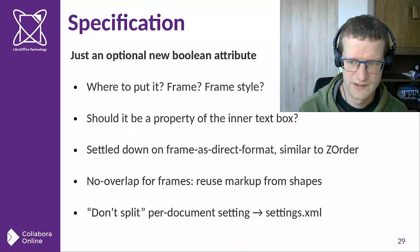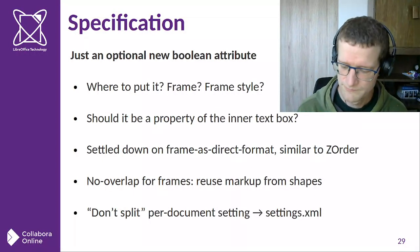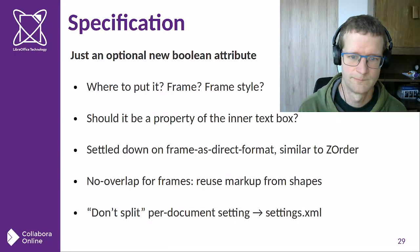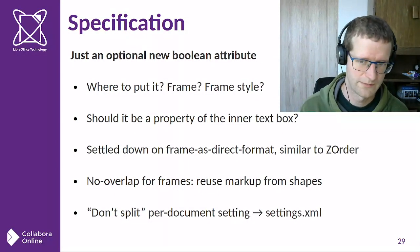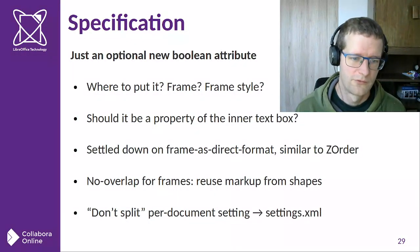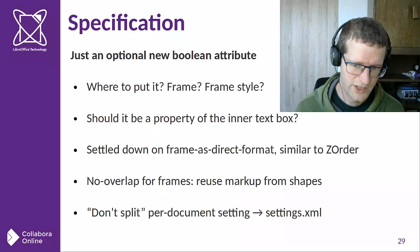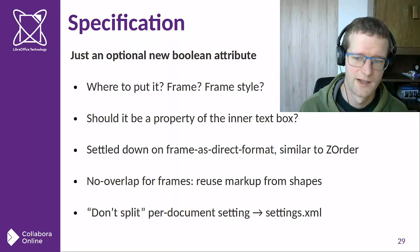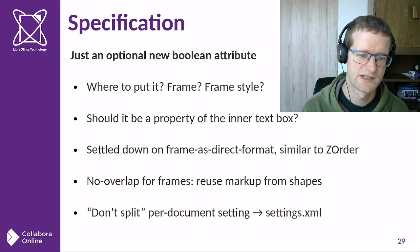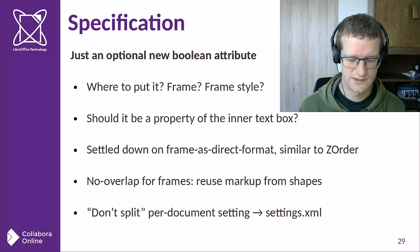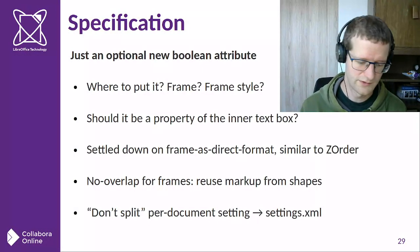It's non-trivial to decide how to represent this in ODF. After discussion on the developer mailing list, the conclusion is that similar to z-order of frames, we will have an attribute to decide if splitting is OK. For the no-overlap per-frame setting, there is already markup for shapes that we can reuse. The per-document setting to completely disable splitting goes into the settings file, similar to other compatibility settings — new values can simply be added there.